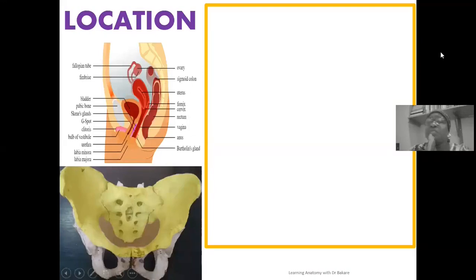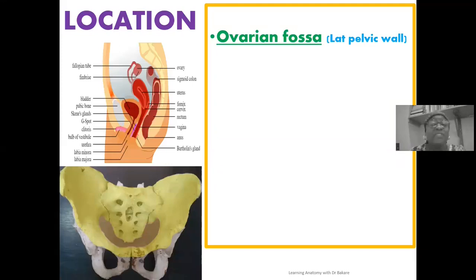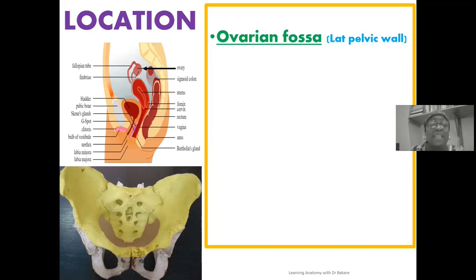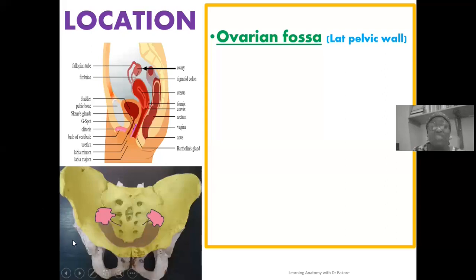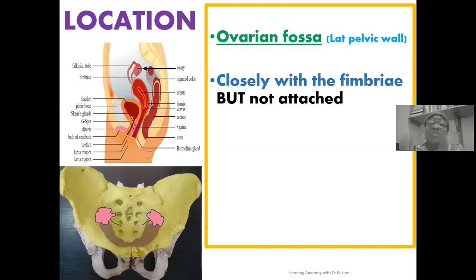The ovary is located within the ovarian fossa — an indentation on the lateral wall of the pelvic cavity. One ovary is positioned within the ovarian fossa on each side. Looking at the configuration of the pelvic cavity, the ovarian fossa is an indentation created to accommodate the ovary, and this ovarian fossa is closely related to the fimbrae of the uterine tube.